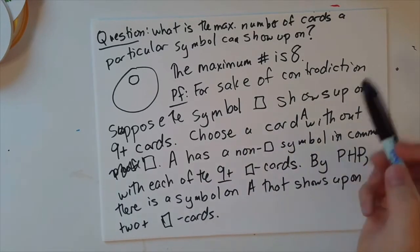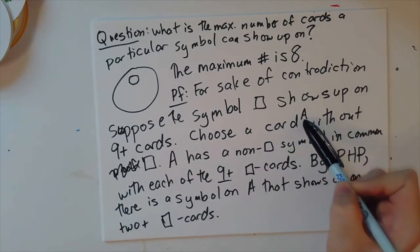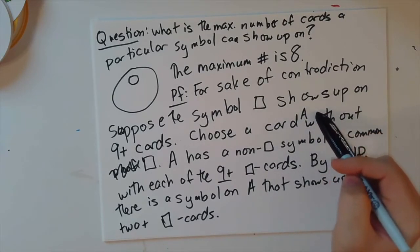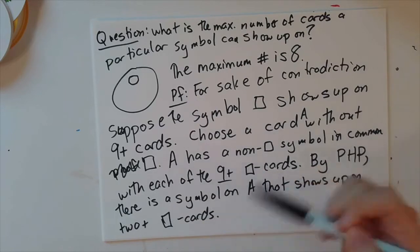Why? Because, well, A only has eight symbols on it. That is one of our axioms. A has eight symbols on it. So if I have nine plus cards, one of them has to be used twice. That's just the pigeonhole principle.